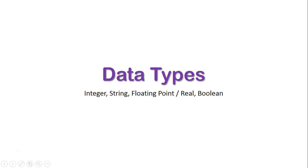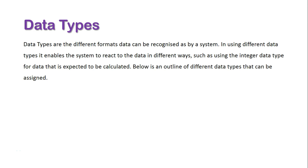We're now going to take a look at data types, specifically integer, string, floating point or real, and boolean data types. Data types are different formats data can be recognized as by a system. Using different data types enables the system to react to the data in different ways.